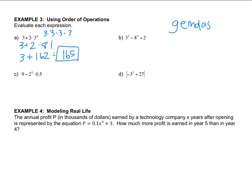Letter B, 3 squared is 9, minus 8 squared is 64, divided by 2. So I just did my exponents all in one shot. Then comes division, 9 minus 32. So that gives me negative 23 as my answer.